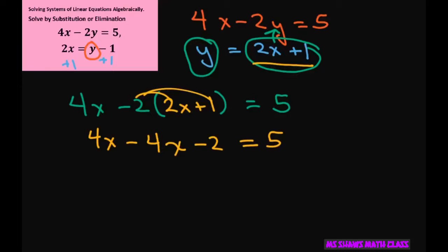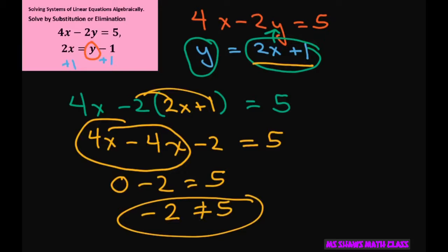And what happens here is these x's cancel. So basically, when you do that, you get 0 minus 2 equals 5. And you get negative 2 equals 5. When you get something like that, it doesn't make sense. That means no solution.